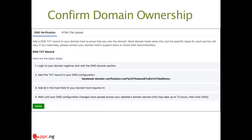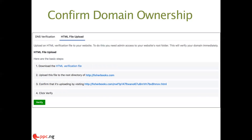If you don't know how to do this yourself, copy the TXT record and send it to your hosting company's technical support with the instructions — just copy and paste it to them and ask them to install it on the back end of your site. It should be done within 24 hours. For those who prefer to do it themselves, you can go to the cPanel of your website. Alternatively, use the HTML file upload option: download the specific HTML file containing the required code and upload it to your site's back end. This works with Shopify, WooCommerce, and WordPress.